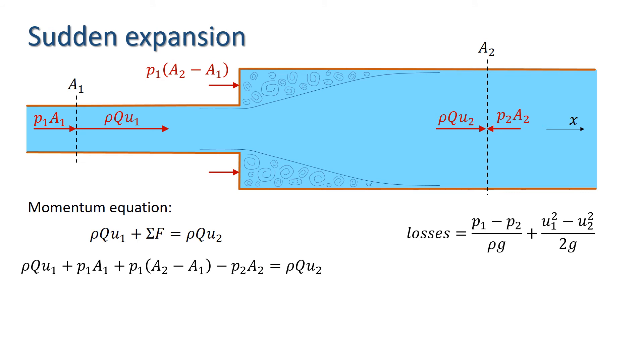The P1A1 terms cancel out and taking the RhoQU1 term over to the right hand side, we have this equation. Note that we can use continuity again here since we know that Q equals U2A2. Thus, division by A2 yields an expression for the difference in pressure across the control volume.